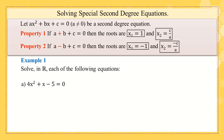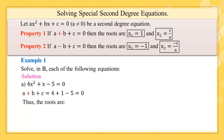Let us see this example, solving each of the following equations. In part (a), you notice that a = 4, b = 1, and c = -5. So a + b + c = 4 + 1 + (-5) = 0. That means the first property is applied, so the roots are x₁ = 1 and x₂ = c/a = -5/4.